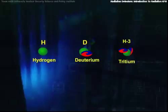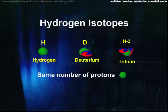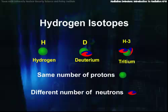Light hydrogen, deuterium, and tritium are all hydrogen isotopes. That is, they all have the same number of protons, in this case one, but differing numbers of neutrons: none, one, or two.